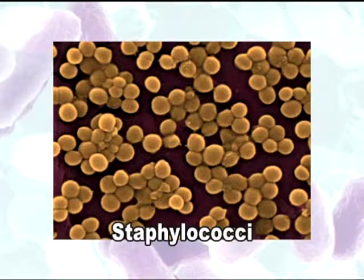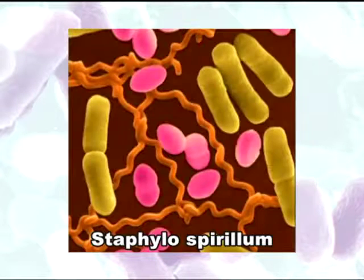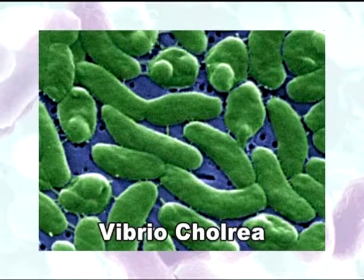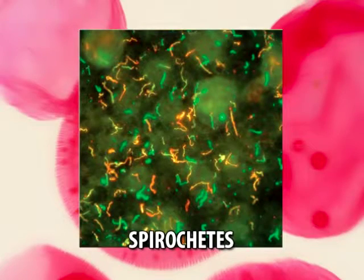Staphylococci are irregular grape-like clusters where the number of spheres is not specific, as seen in Staphylococcus aureus. There is also a spirellum arrangement — grape-like clusters of spirals. Another principal shape is vibrio or spiral bacteria, which may be curved rods as seen in Vibrio cholerae, or cork-screw shaped, for example spirochetes.